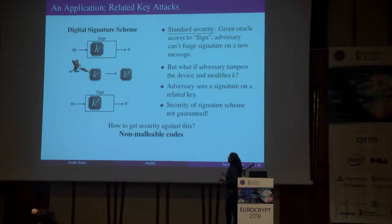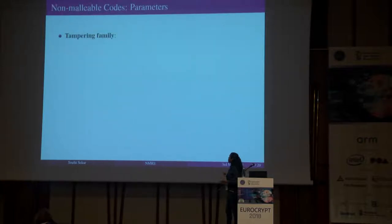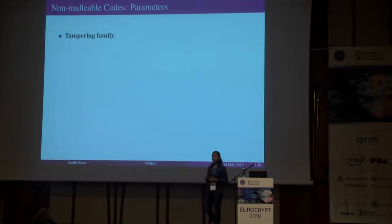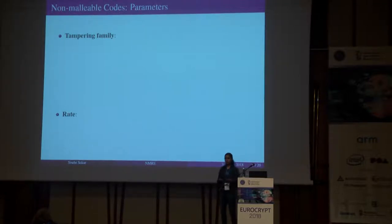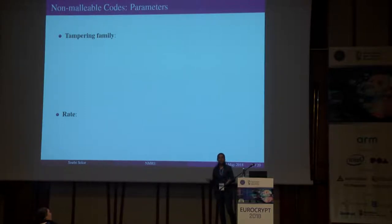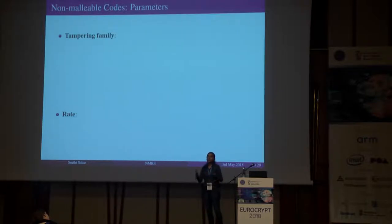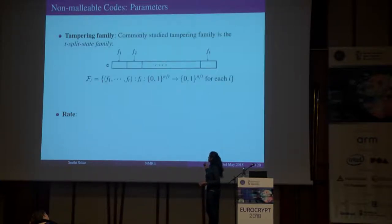The important parameters for non-malleable codes are the tamping family with respect to which you are constructing them, and the rate of the code. Non-malleable codes cannot be constructed for the family of all functions, so they must be defined for specific families. Today I will focus on the T-split state family, which has been very commonly studied. In this family, you split the code word into T chunks and allow the adversary to tamper each block independently.